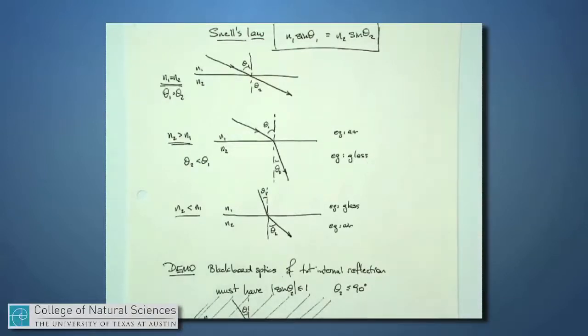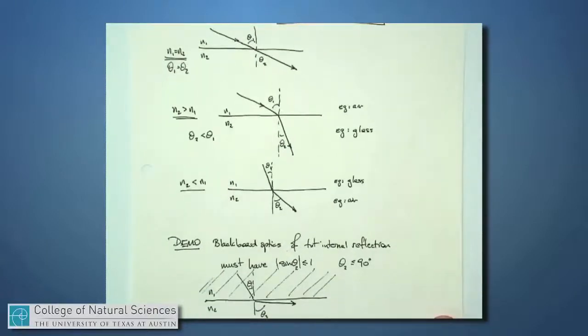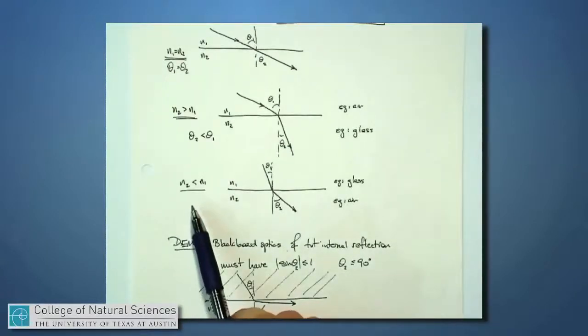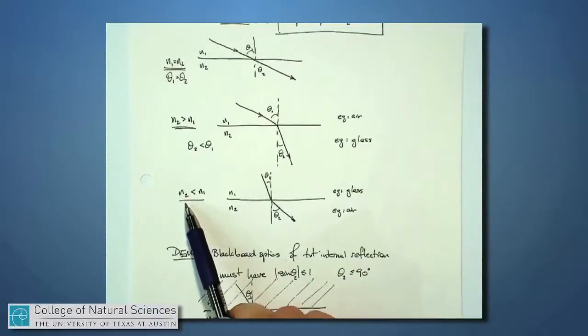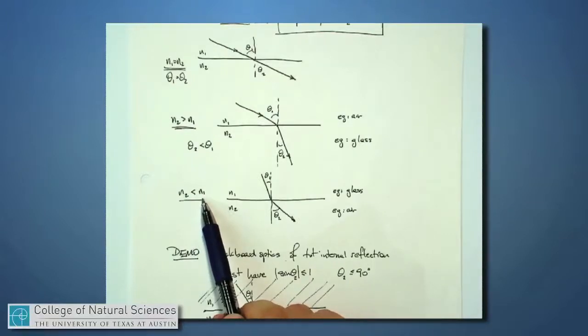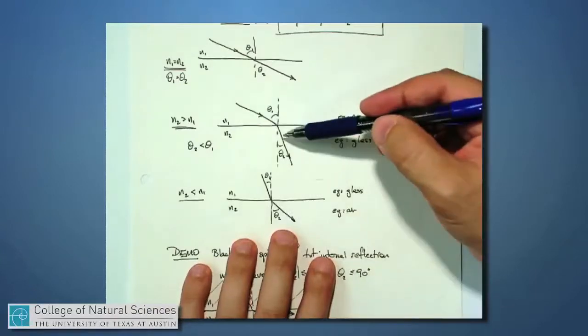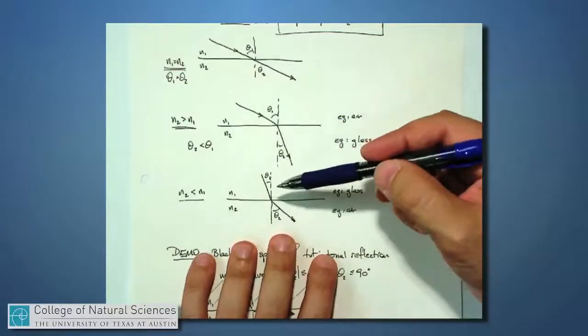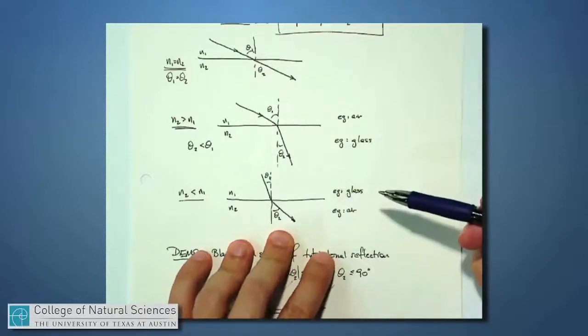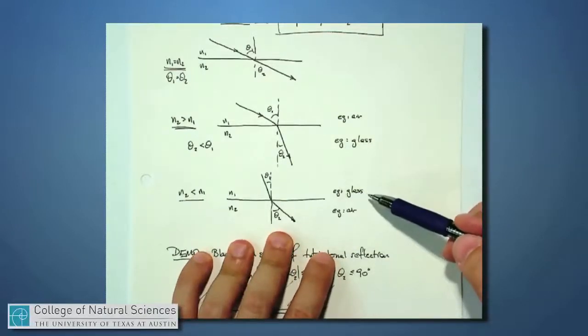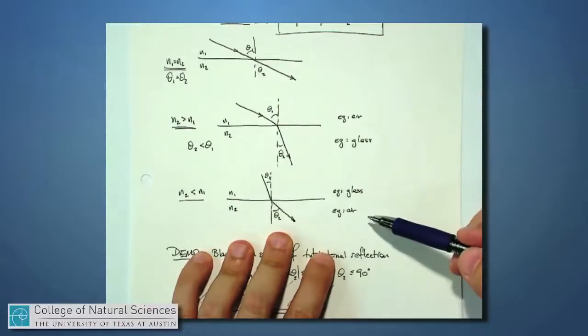like we were talking about before, or like I demonstrated earlier. On the other hand, if I go from a material that's a smaller index and coming from a material that is at bigger index, then what happens? Instead of the light bending toward the perpendicular, I expect the light to bend away from the perpendicular. And that might be the kind of case where light is going from glass and into air. And actually we saw that a little while ago as well.